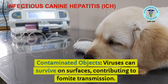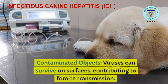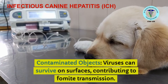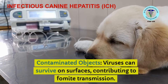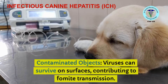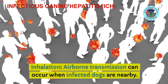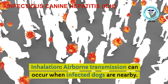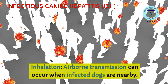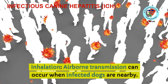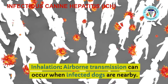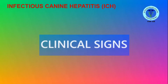Contaminated objects can also spread the virus, as it can survive on surfaces, contributing to fomite transmission. Airborne transmission can also occur when infected dogs are nearby, so be careful to protect your dog.